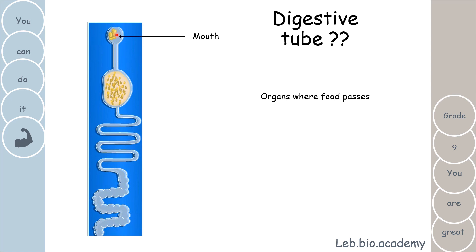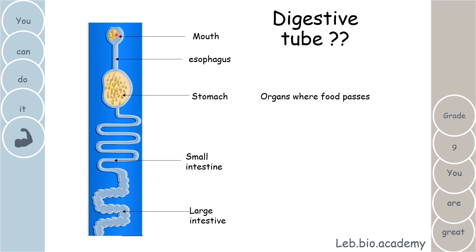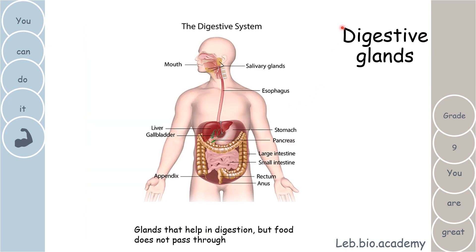The food first passes in the mouth, then the esophagus, then the stomach. After the stomach, the food will pass into the small intestine, then the large intestine — and pay attention, only the undigested food will keep moving to the large intestine — and finally the anus. So the digestive tube is made up of: mouth, esophagus, stomach, small intestine, large intestine, and anus.